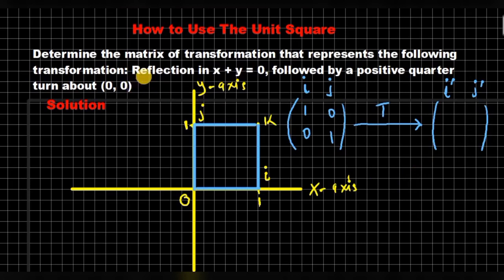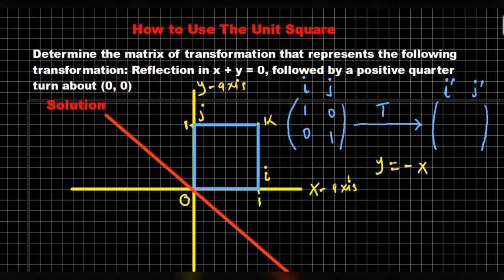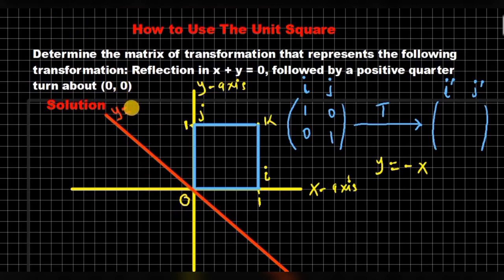Let's look at what we have in the equation. We have reflection in line x plus y is 0. We know that x plus y equals 0 is just y equals negative x, and if we plot that accurately, the line passes through the origin, so that the coordinates of points on this line will be (1, -1), (0, 0), (-1, 1), and so on. So this becomes the line y equals negative x.